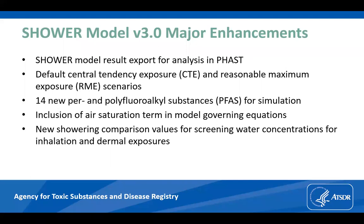Other updates include the addition of 14 new PFAS for simulation, bringing the total to 17 PFAS, of which only two are volatile. Some of these PFAS have health guidelines and others do not, but they're included so health assessors can see the magnitude of their contribution to the inhalation and dermal pathways. Additionally, new showering comparison values were developed, which let health assessors screen water concentrations for inhalation and dermal exposures without running the shower model. These are currently available as a downloadable file in FAST version 2.1.